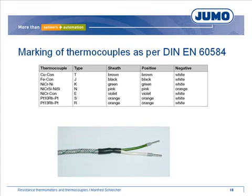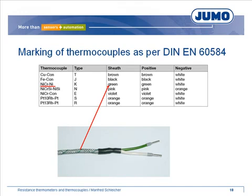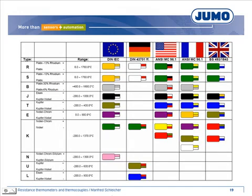When thermocouples are manufactured to standard EN 6584, the color of the compensation cables and the limbs enables you to identify the kind of thermocouple. For example, the sheath of the often-used thermocouple nickel-chrome-nickel type K has a green marking. The positive terminal is green and the negative terminal is white. This chart also shows the color coding as per different international standards.